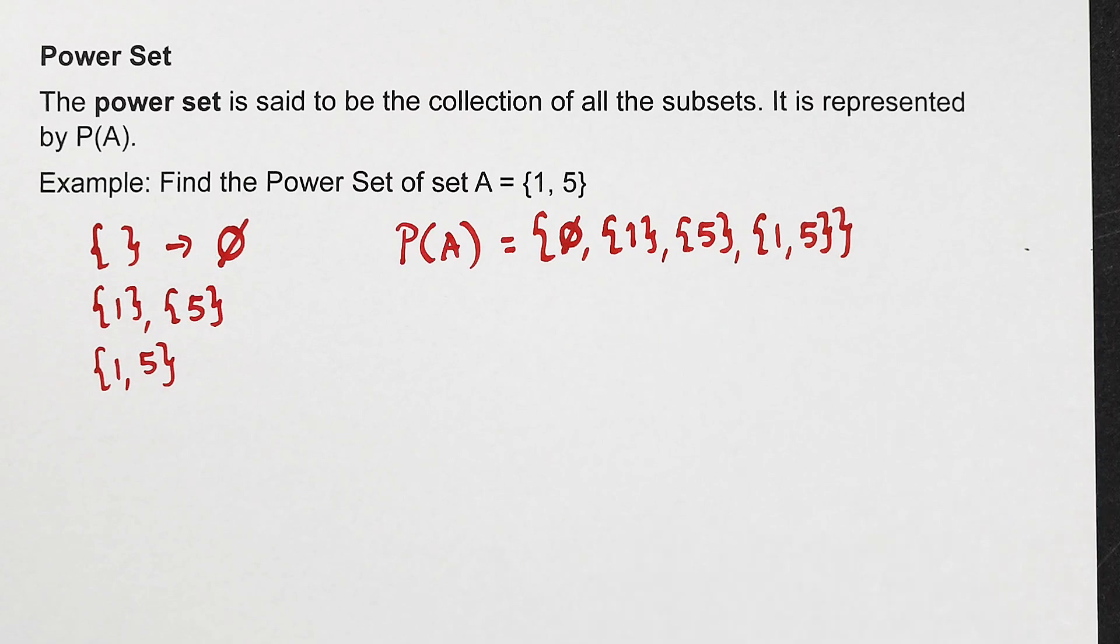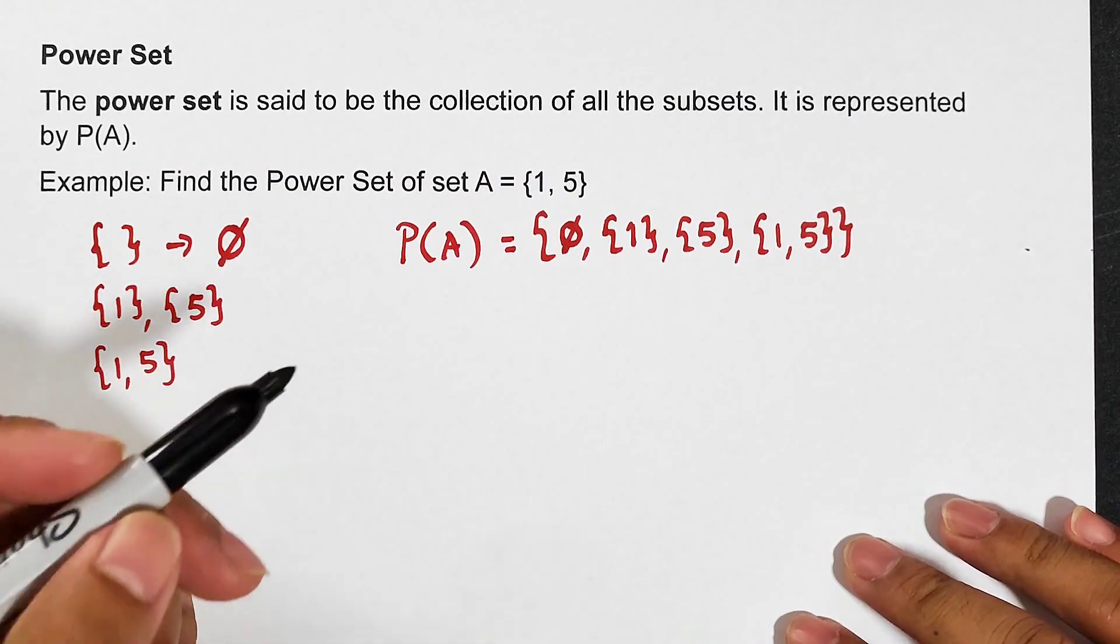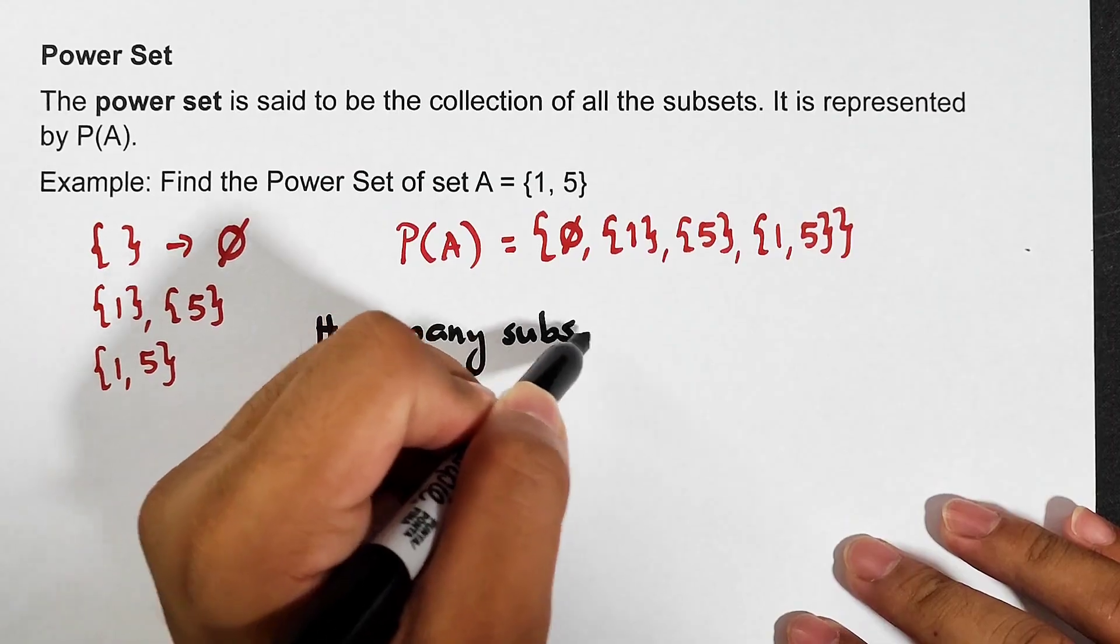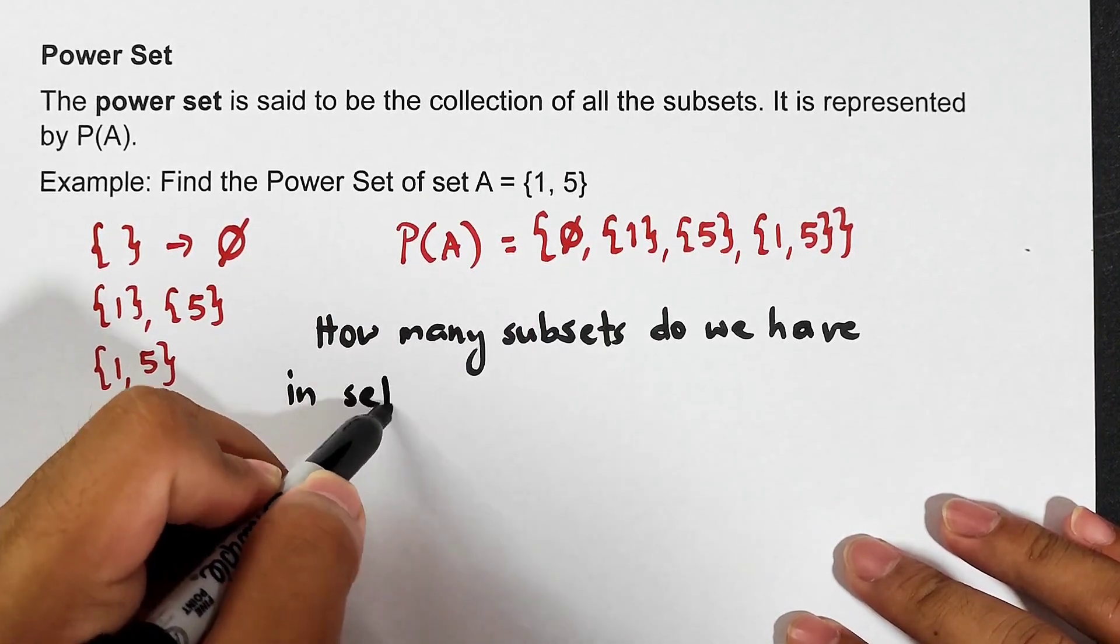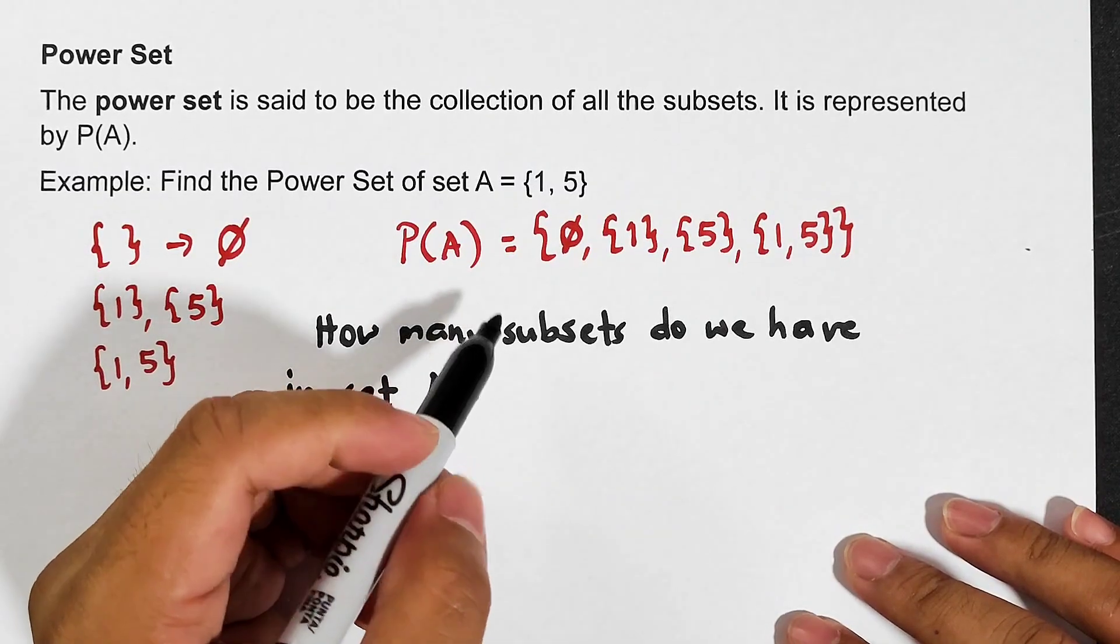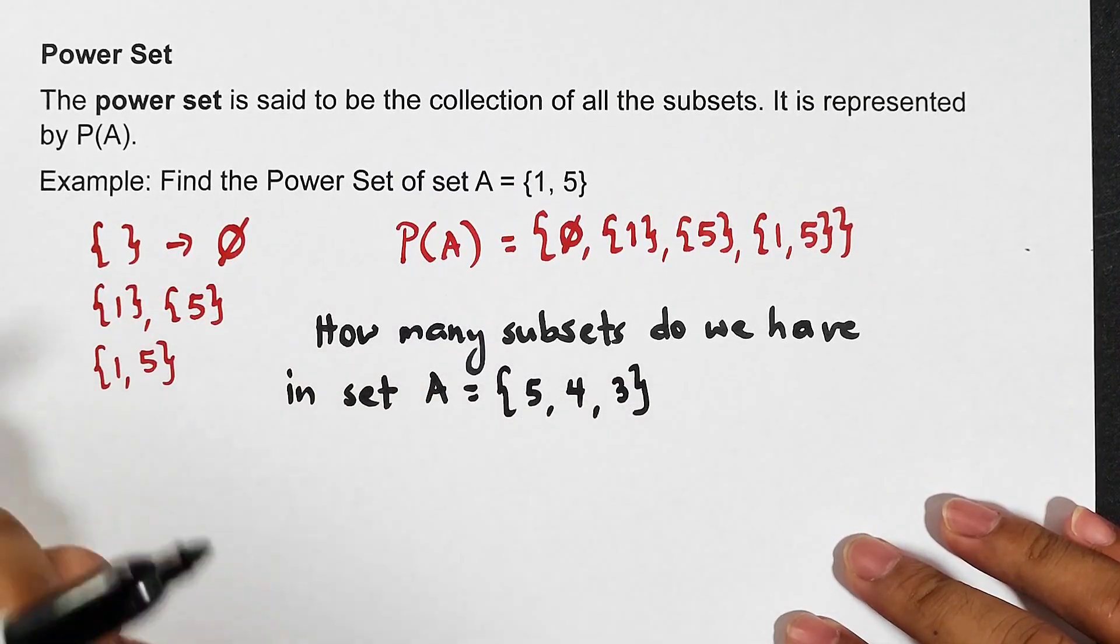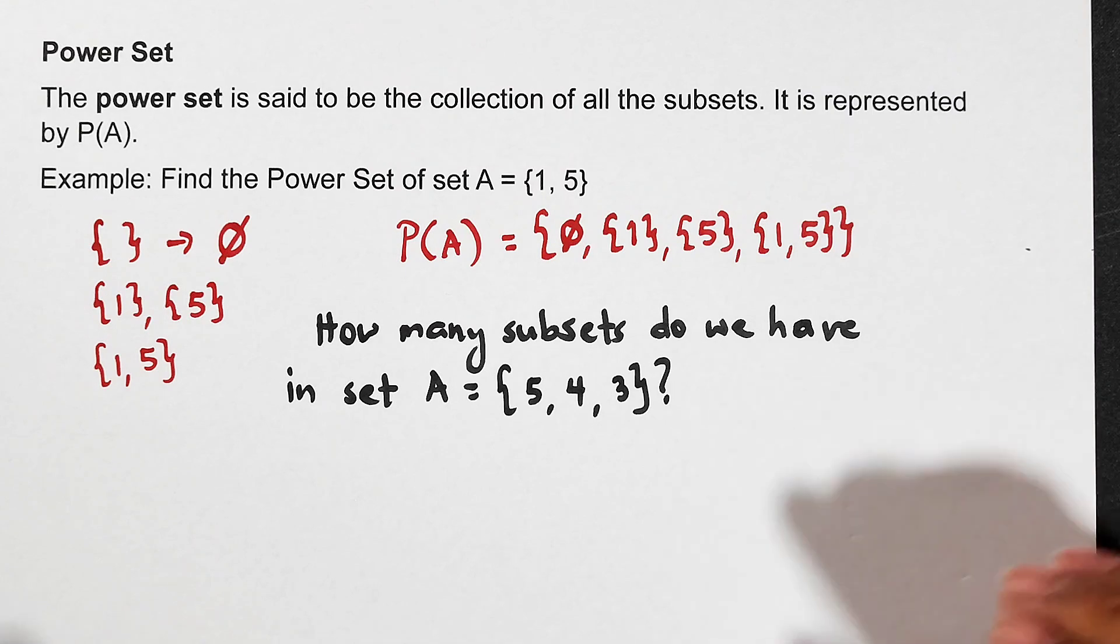So I hope guys you learned something from this video about the definition of subsets, how to get the subsets of a set, the types of subset, and power set. As a routine in our video, let me ask you: how many subsets do we have in set A wherein the elements are five, four, and three? Please comment down below what is your answer. Again, I'm just asking how many subsets we have. You don't need to list them. So guys, if you're new to my channel, don't forget to like and subscribe. Hit the bell button for you to be updated on our latest uploads. Again, it's me Teacher Gone. Thank you very much. Bye.